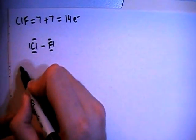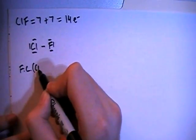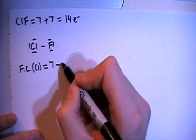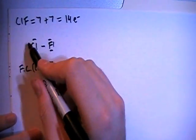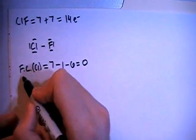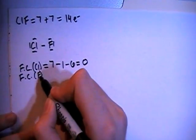We can go ahead and verify that by checking the formal charges. So the formal charge on the chlorine is going to be equal to the 7 valence brought in minus the 1 single bond minus the 2, 4, 6 nonbonding electrons for a formal charge of 0.